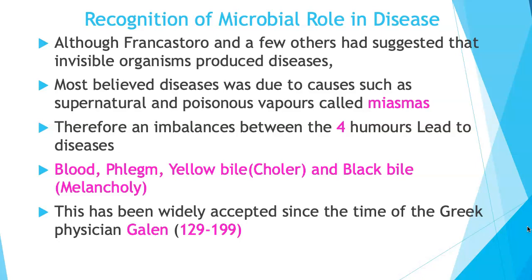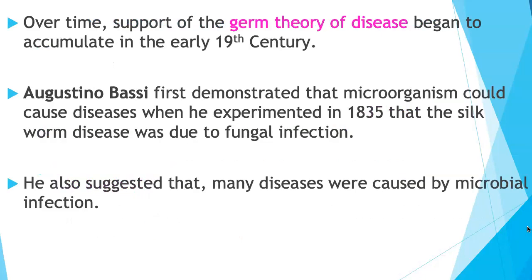Diseases were therefore viewed as an imbalance of four humors forming within humans. These miasma-caused imbalances involved four humors: blood, phlegm, yellow bile, and black bile. This was widely accepted even since the time of the Greek physician Galen. Over time, support for the germ theory of disease began to accumulate.